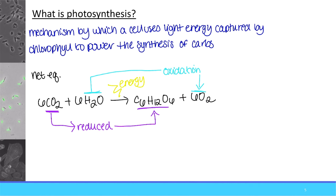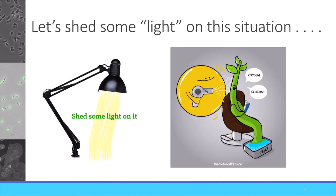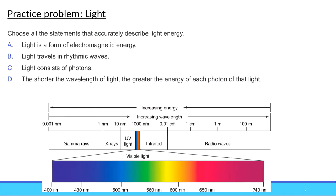Before we get into the nitty gritty details of photosynthesis, we first have to talk about the 'photo' part — photo means light. We're going to start with a practice problem. I want you to pause the video and think about which of the statements shown are true and false about light. Statement A: light is a form of electromagnetic energy — this is absolutely true. If you think back to our spectrophotometer lab, I asked you to look up the electromagnetic spectrum.